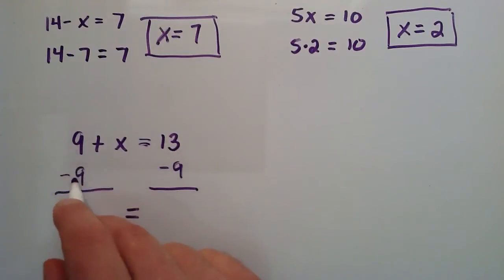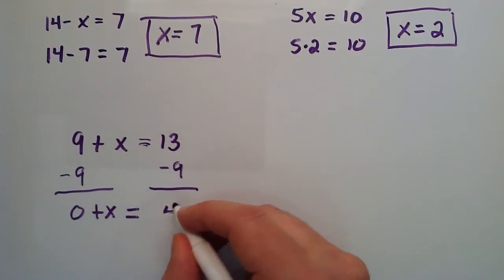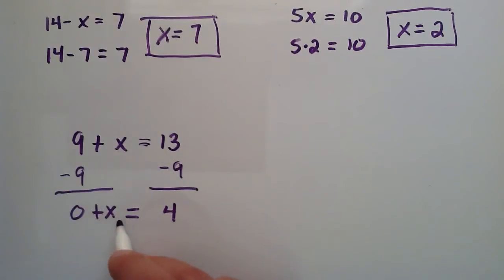So, 9 minus 9 is 0, and then we have the plus x term here. And then we have 13 minus 9 is 4. So, this is 0 plus x equals 4, or simply x equals 4. This is our answer, and we got it using algebra.